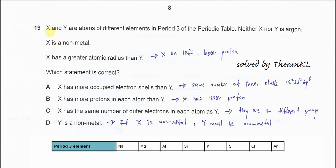Question 19: X and Y are atoms of different elements in Period 3. Neither X nor Y is argon, so argon is excluded. X is a non-metal, so sodium, magnesium, and aluminum are also excluded. It could be one of these four elements, but we don't need to know exactly which ones yet.